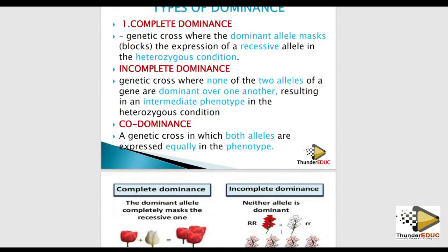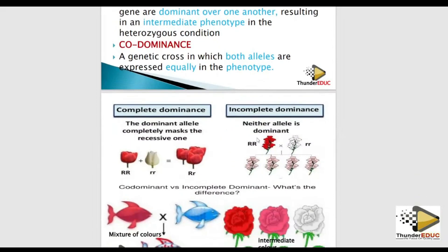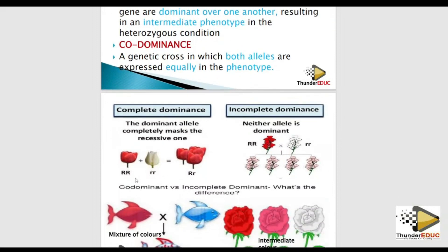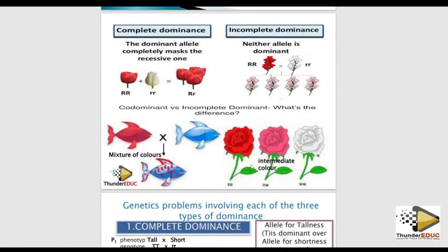In complete dominance, one allele is completely dominant — you have a capital allele and a small allele. In incomplete dominance, both alleles are capital but they produce an intermediate phenotype. For example, combining white and red produces pink. In codominance, the cross is similar but you produce a mixture of both original phenotypes instead of an intermediate.